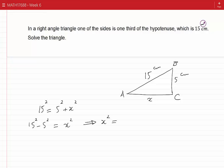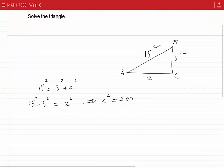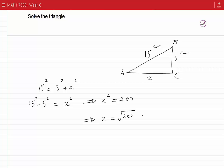If we take the root of both sides of this equation, we see that X is root 200 or minus root 200. We drop the negative solution because the side of a triangle cannot be a negative number.